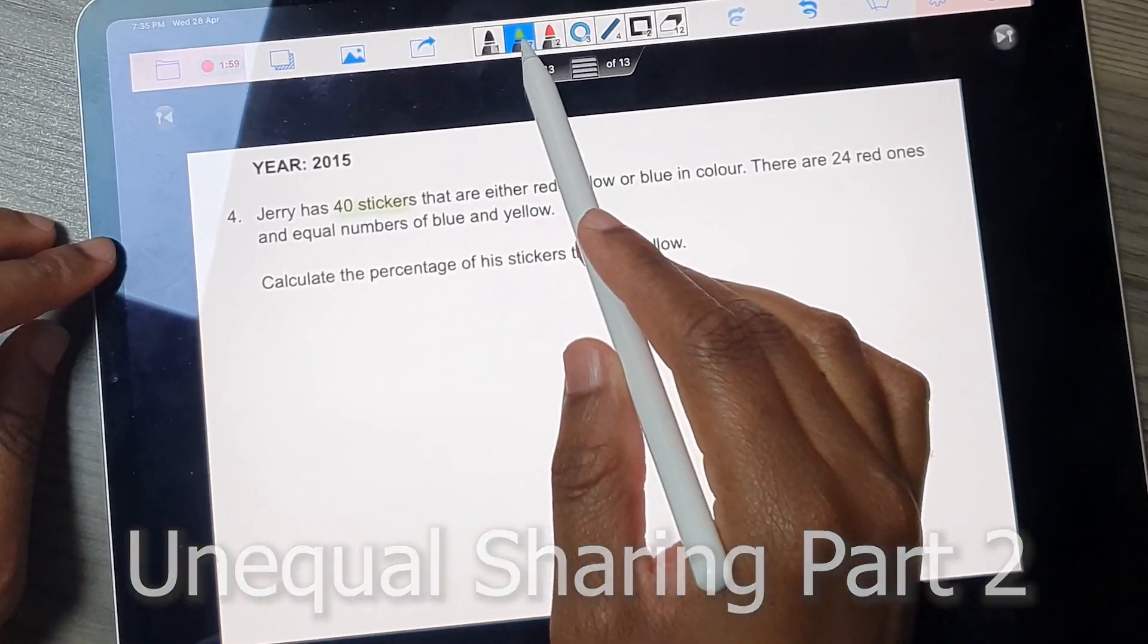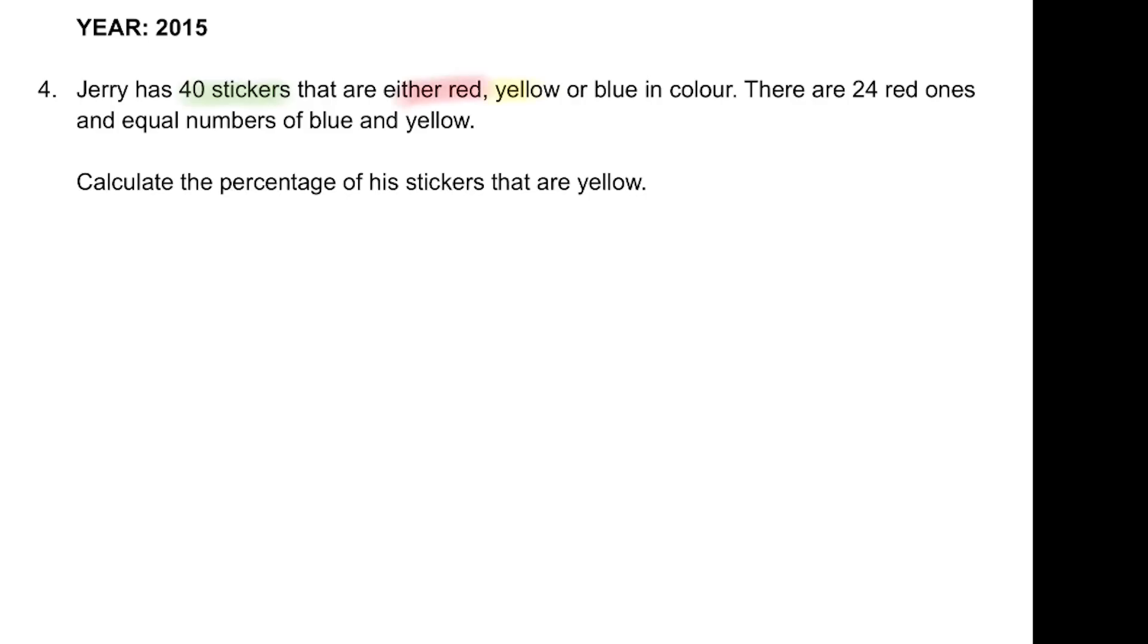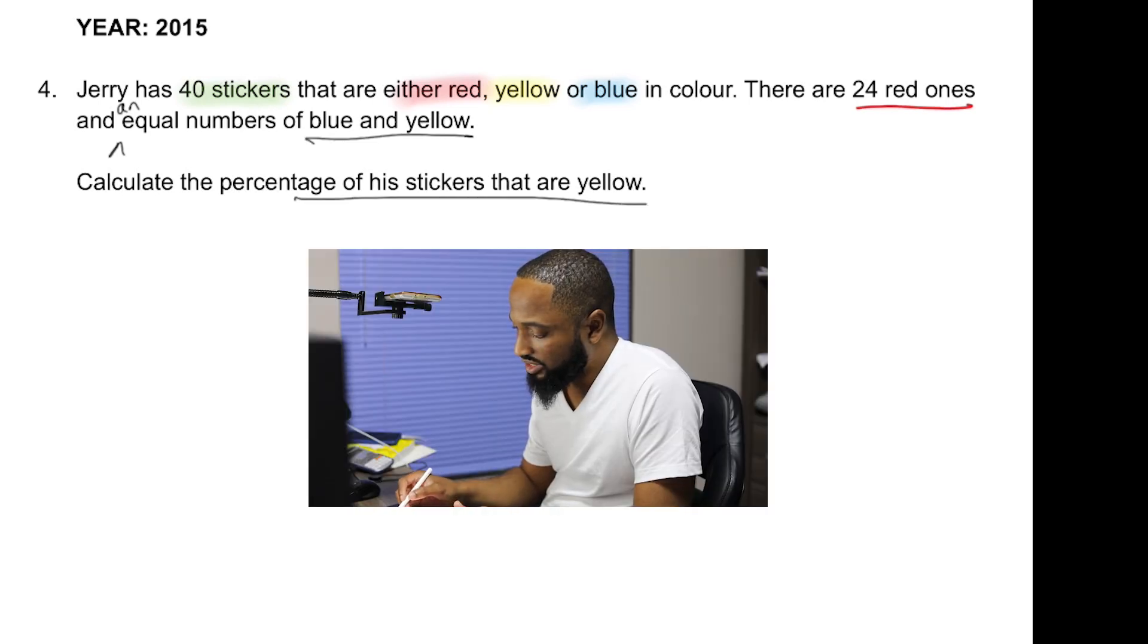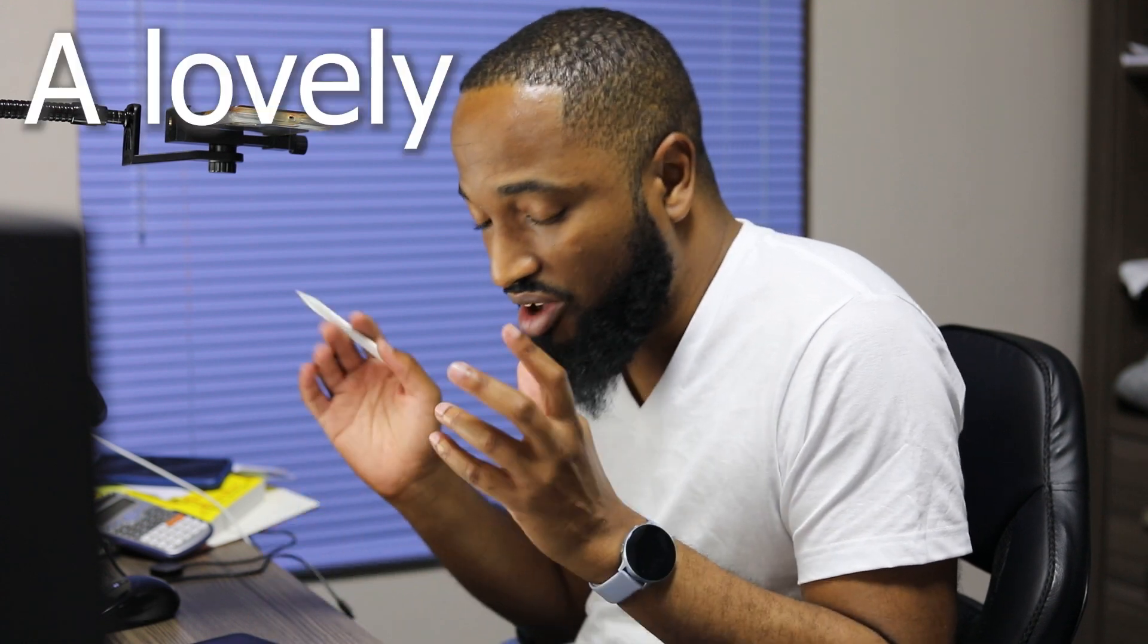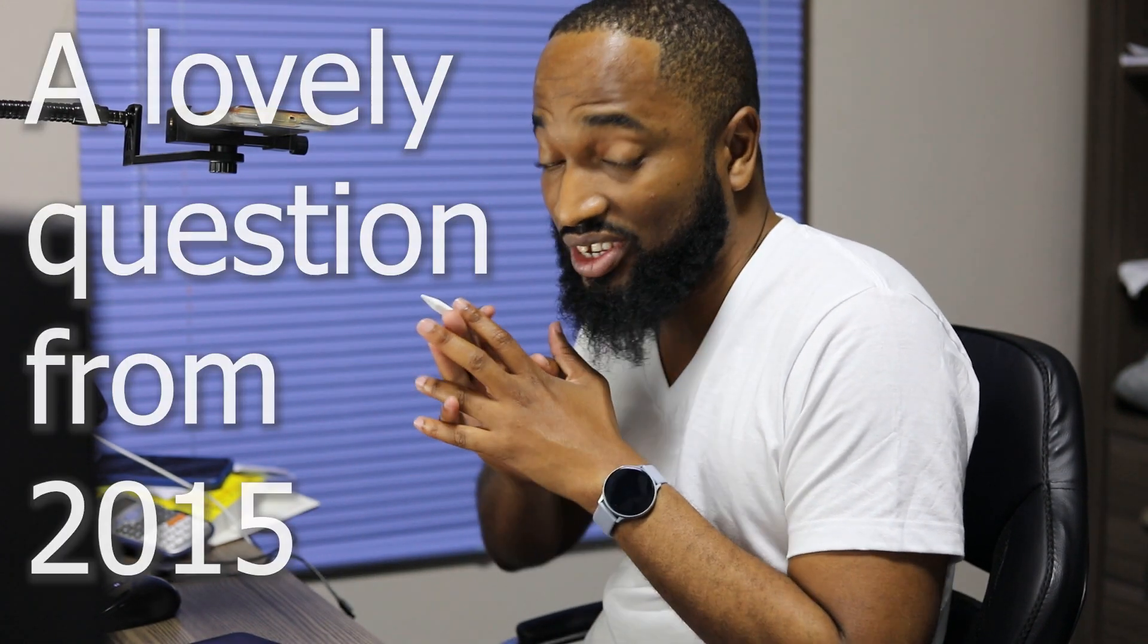Jerry has 40 stickers that are either red, yellow, or blue in color. There are 24 red ones and an equal number of blue and yellow. Calculate the percentage of stickers that are yellow. A lovely question from 2015.